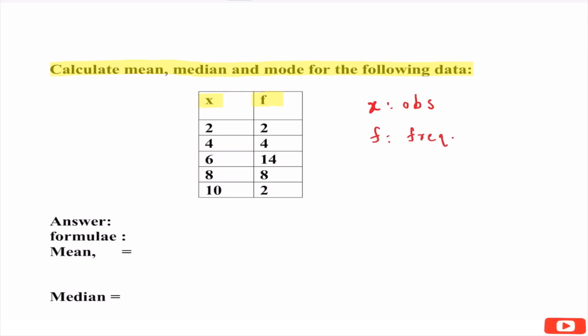Now we know that this data is in the form of discrete frequency distribution. What do we mean by that? Discrete frequency distribution means in the first column we are given directly the observations and in the second column we are given frequencies.